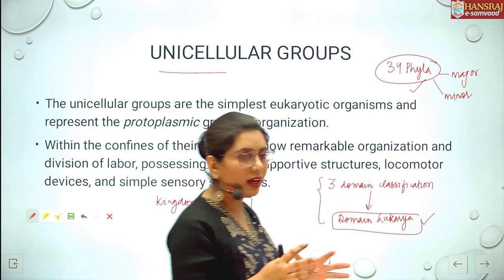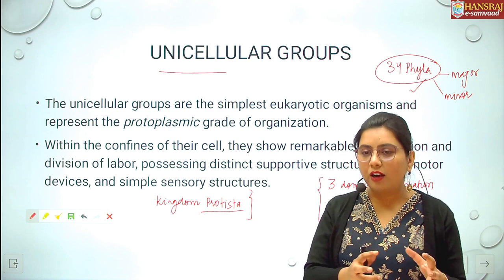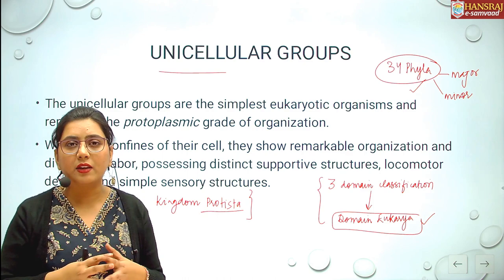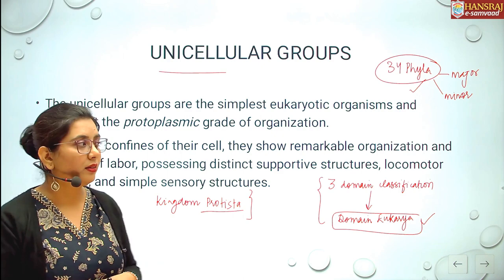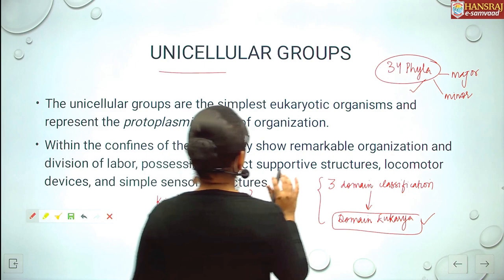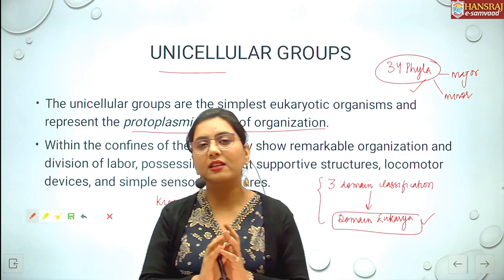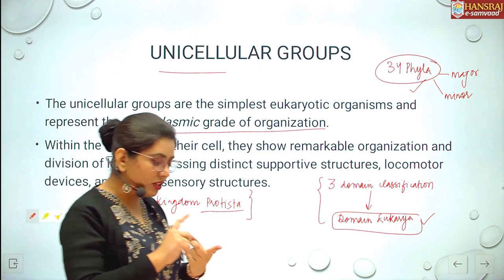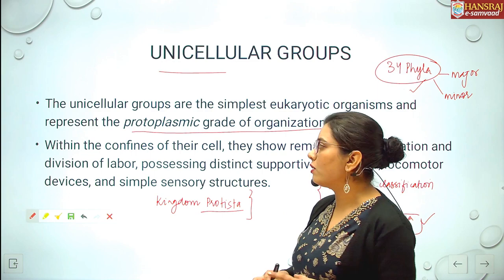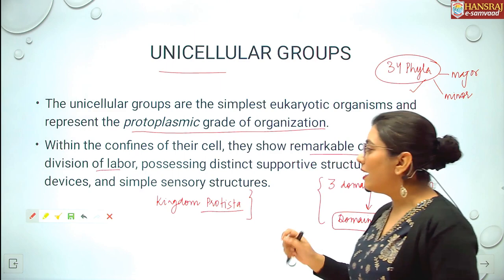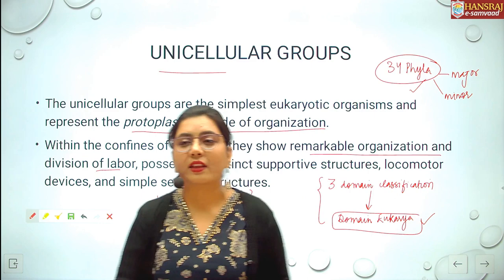Let us look at the unicellular groups. When we classify organisms, we follow a hierarchical pattern, starting from basic life forms and moving to higher forms. Unicellular groups are the simplest eukaryotic organisms and represent the protoplasmic grade of organization — that one cell is able to do every functionality: ingestion, digestion, assimilation, ejection, exchange of gases, osmoregulation. They show remarkable division of labor at the subcellular level, at the level of cell organelles. They have distinct supportive structures, locomotory devices, and simple yet potent sensory structures.